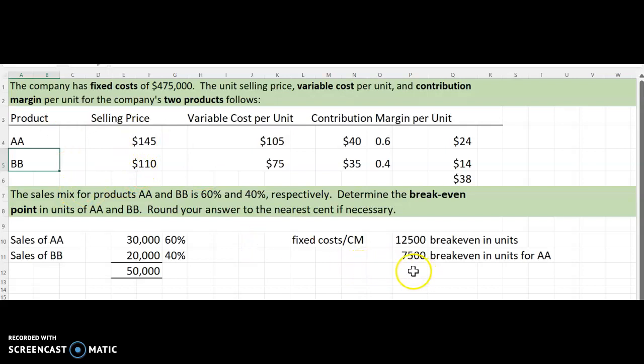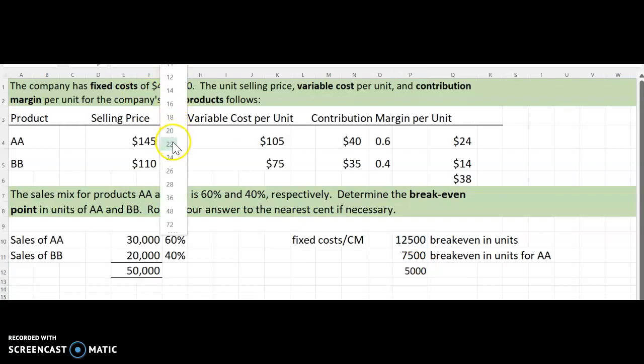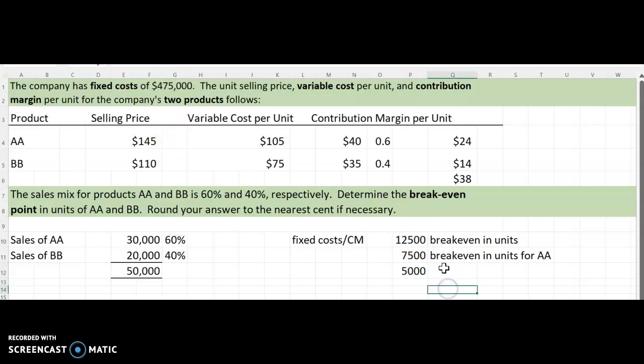And then we're going to do the same thing. We're going to take the 12,500 and we're going to multiply it by 0.4. And that is going to give me break-even in units for BB.